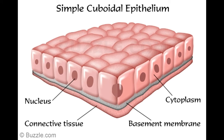Simple cuboidal epithelium also covers the lens of the eye, where it controls the movement of nutrients and water into and out of the lens from the surrounding eye fluid. This ensures that the amount of substances in the lens, and its size, are maintained. The cells of this epithelium are larger than other epithelia because they have a higher number of cell organelles — specialized structures like mitochondria, ribosomes, and Golgi bodies — thus resulting in a larger cell.